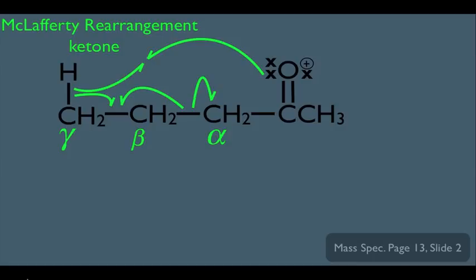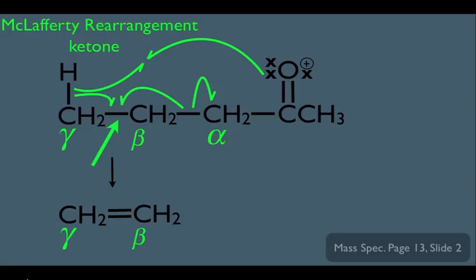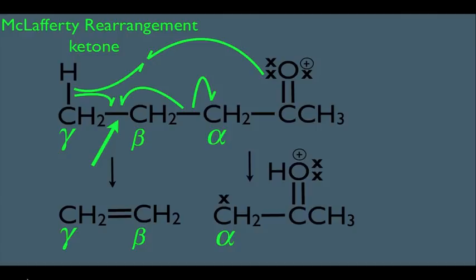Let's take this part by part. This electron movement means the bond between alpha and beta is going to be broken. These two electrons meeting up means a new pi bond is going to be formed between the beta and the gamma carbon. The alpha carbon has one electron jumping up on top of him, so he's going to become a radical. And the H on the gamma carbon meets up with the oxygen. The fragment on the right is charged, so it would be detected by the mass spec.